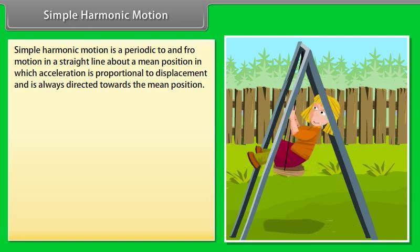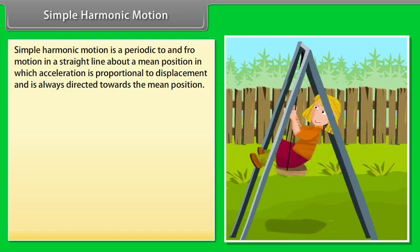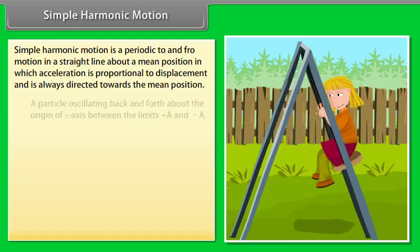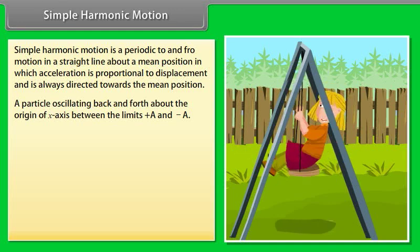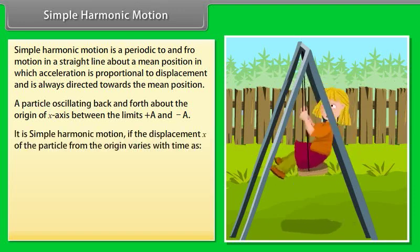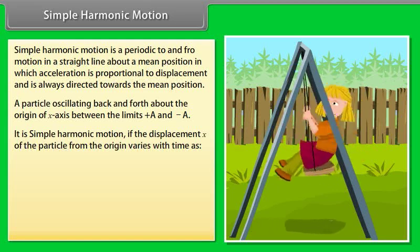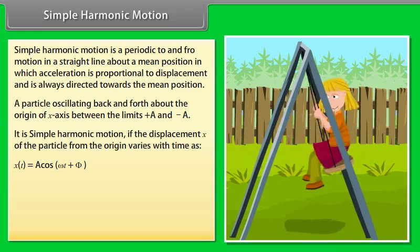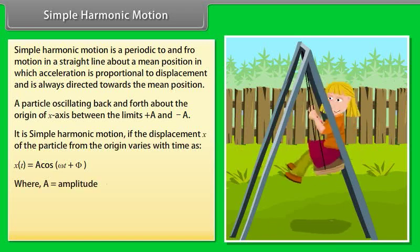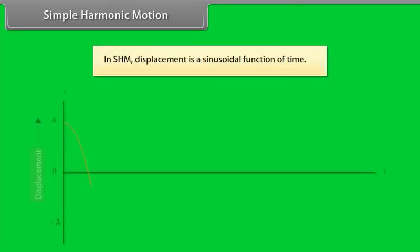Simple harmonic motion is a periodic to-and-fro motion in a straight line about a mean position in which acceleration is proportional to displacement and is always directed towards the mean position. Consider a particle oscillating back and forth about the origin of an x-axis between the limits +A and -A. It is simple harmonic motion if the displacement x of the particle from the origin varies with time as x(t) = A cos(ωt + φ), where A is the amplitude, ω is the angular frequency, and φ is the phase constant. In simple harmonic motion, displacement is a sinusoidal function of time.